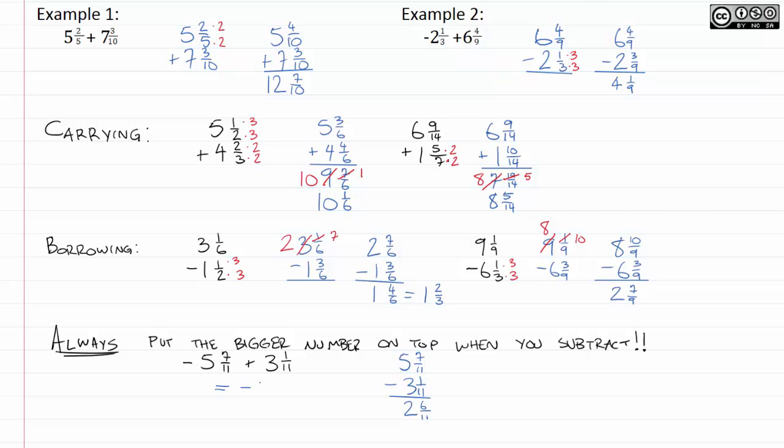And so, our answer here is the negative of that, negative 2 and 6 11ths. So, these are just some little things to watch out for as you do this. You'll want to practice this a bit yourself. But I think with a little practice, you'll surprise yourself at how easy this actually is. So, take a look at that and good luck.